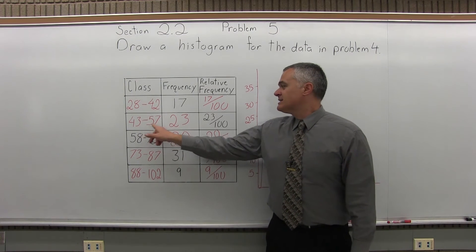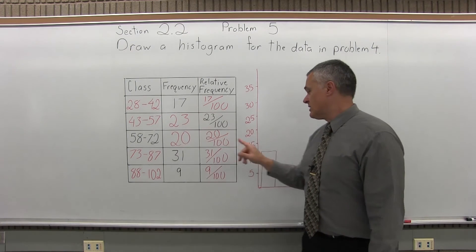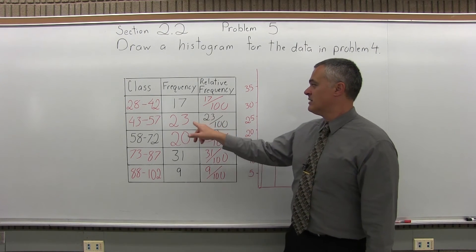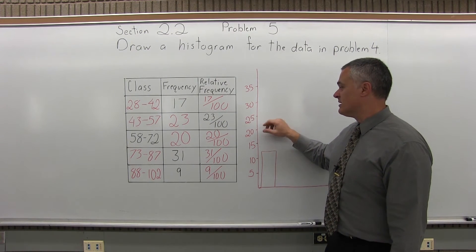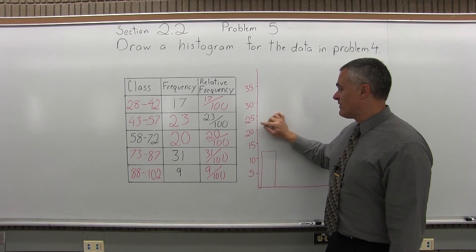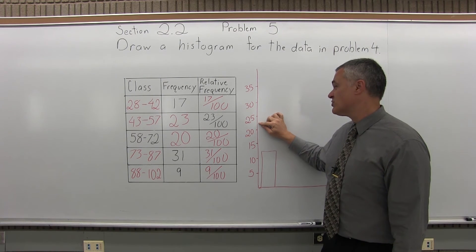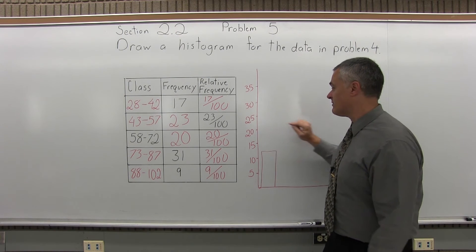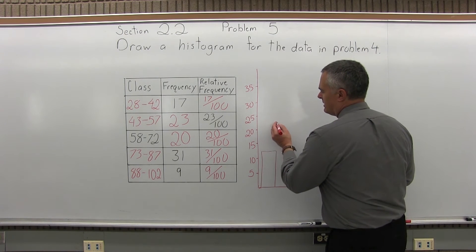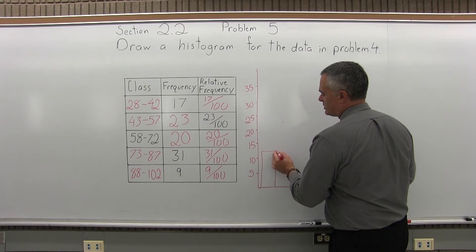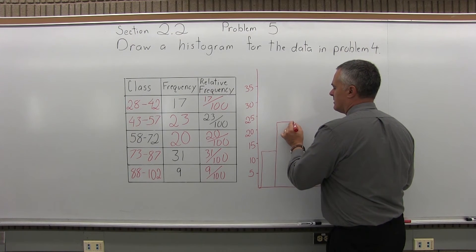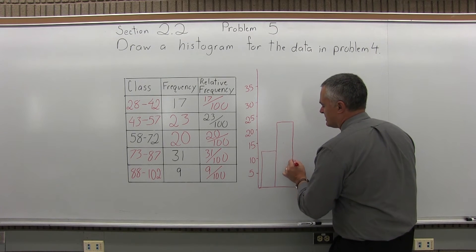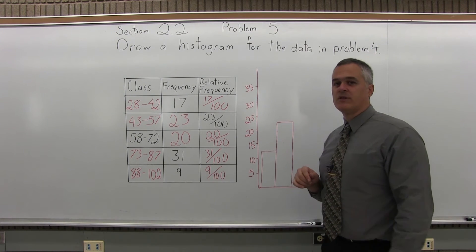The next class has a frequency of 23. So, the next bar will have a height of 23. Now, like the 17, I don't have a 23 on my number scale. But I can estimate it. Between 20 and 25, exactly in the middle is 22.5. So, 23 is a tiny bit higher than 22.5. So, my next bar would be slightly higher than that halfway point. Again, the bar should touch. So, I will continue the edge of the previous bar up to that height of 23. And get the bar to be about the same width. And there's the second bar for the histogram.